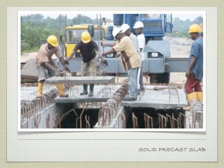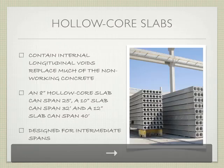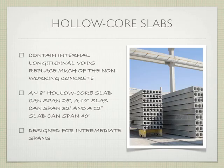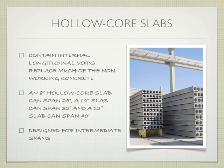The piece is cast off-site, brought to the site, and placed where it needs to go. From solid slabs, we move into hollow core slabs, characterized by repeated circular or long oval patterns that take out some of that non-working concrete. We're decreasing the weight of the piece, and by doing so we're able to span a little further — they contain internal longitudinal voids that replace the non-working concrete. An 8-inch hollow core slab can span 25 feet; a 12-inch slab can span 40 feet. They're designed for the intermediate span category.